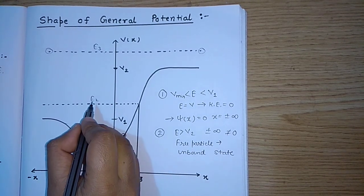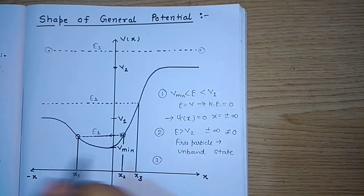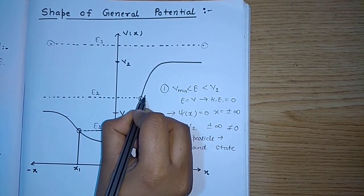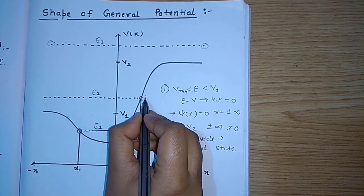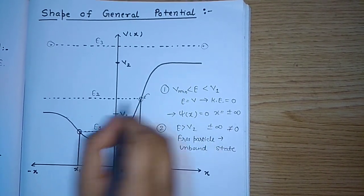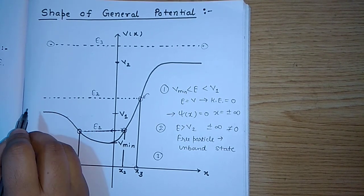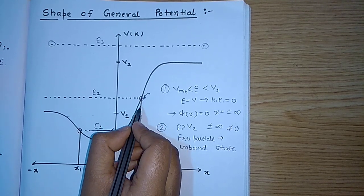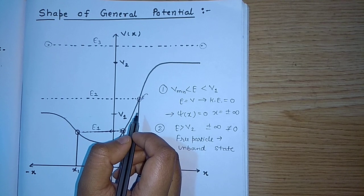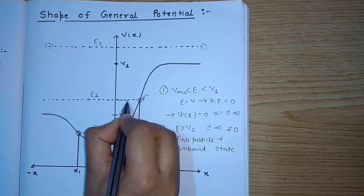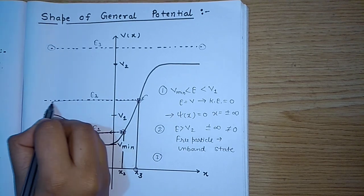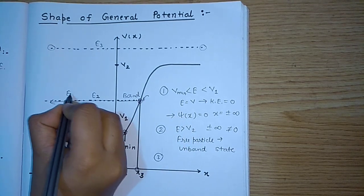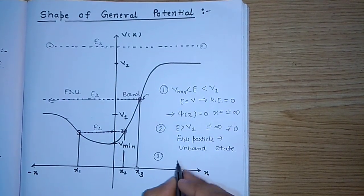The third case is E2. When the energy is E2, at position x3 the energy becomes equal to the potential — so there is one turning point. But in the negative infinity direction there is no turning point. The particle is confined in the positive x direction but is not confined in the negative x direction. It is bound on one side and free on the other. This is called the mixed state.